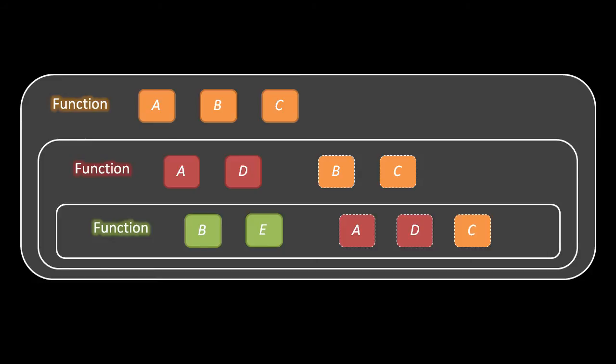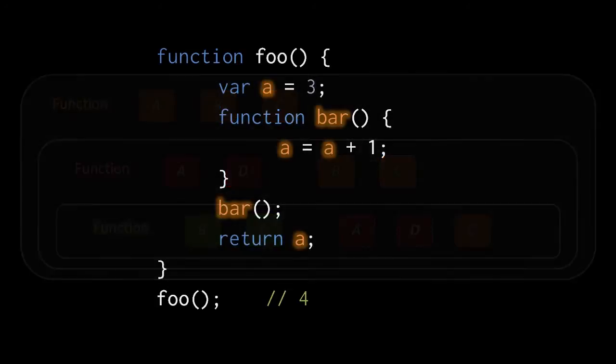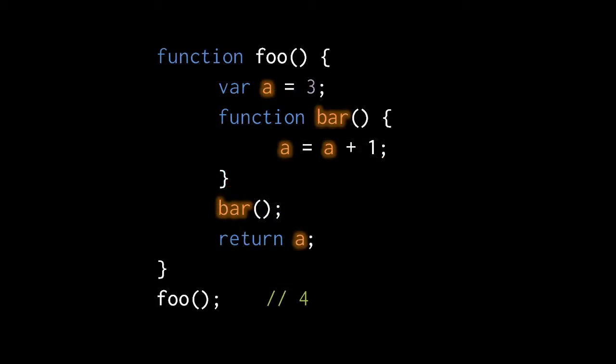So if a name conflict prevents you from accessing a variable of an enclosing function, you can always just resolve the name conflict. For example, if we want to use b of the orange function in our green function, we could just rename b of the green function to some other name that doesn't conflict. Be clear that a nested function can modify an enclosing function's variables. Here, in the call to foo, the nested function bar increments the variable a of foo, and so the call to foo returns 4, not 3.